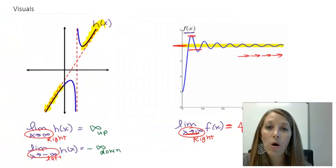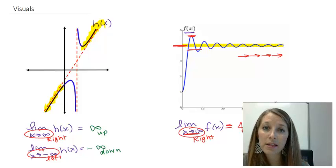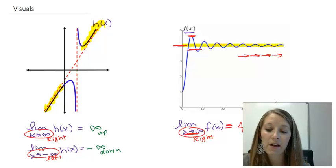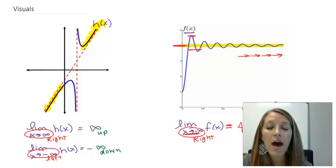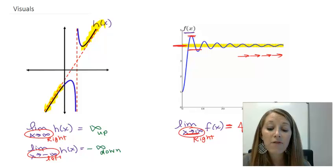So we can see again, what we're trying to do with infinite limits is look at what's happening on the very right-hand side and the very left-hand side of the graph. I'm going to stop this video here, and in the next video we're actually going to be looking at functions and figuring out how to find limits at infinity and negative infinity when we don't have visuals to go along with them.